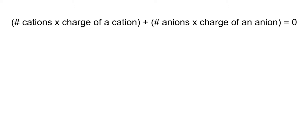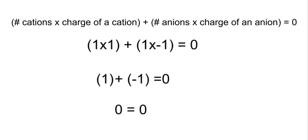If we use our sodium chloride example here it would be 1 times a positive 1 plus 1 times a negative 1 equals 0. One times a positive 1 equals positive 1. One times a negative 1 equals negative 1. Positive 1 plus a negative 1 equals 0. Yes! We did it!